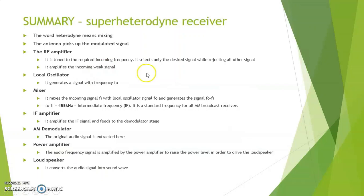This is the summary of the Superheterodyne receiver. The most important factor in this is 455 kHz which is the intermediate frequency.